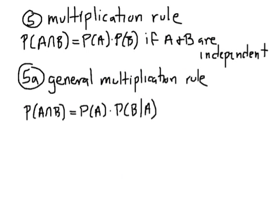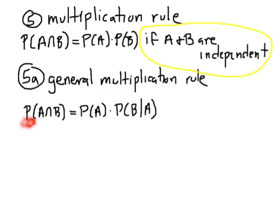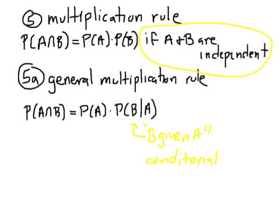Our next modification is to the multiplication rule, which was rule number five: the probability of A and B is the probability of A times the probability of B. At the time, I said this only applies if A and B are independent. Now we're going to come up with a general multiplication rule that works whether or not A and B are independent. The general multiplication rule is: P(A and B) = P(A) × P(B|A), where the vertical bar means 'given' — that's a conditional probability, the probability of B occurring given that A occurred.